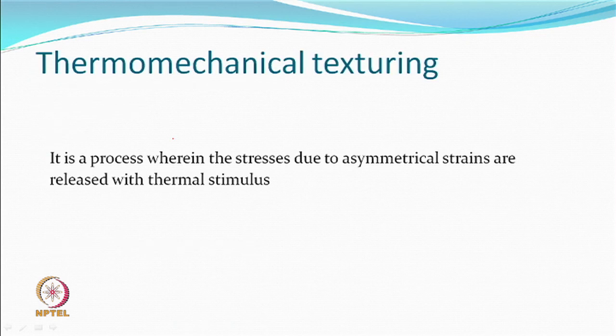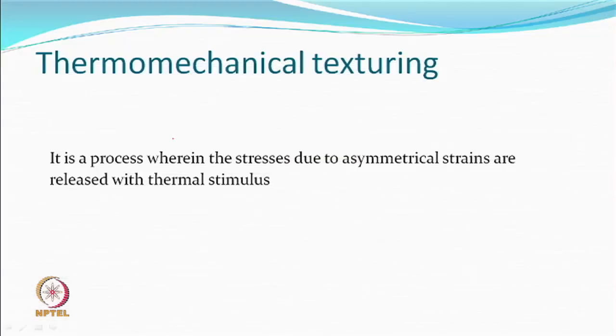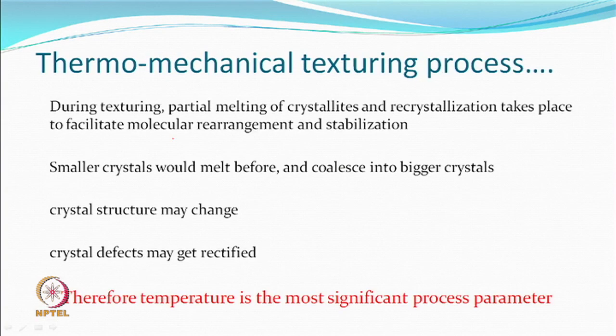Thermomechanical texturing is a process wherein stresses due to asymmetrical strains are released with some thermal stimulus. Asymmetrical strains mean different portions of the filament or different filaments within the yarn may not be strained to the same extent. Therefore, the asymmetrical stresses are being released, and the setting occurs because of release of energy. During this texturing process there will be partial melting of crystallites and recrystallization.